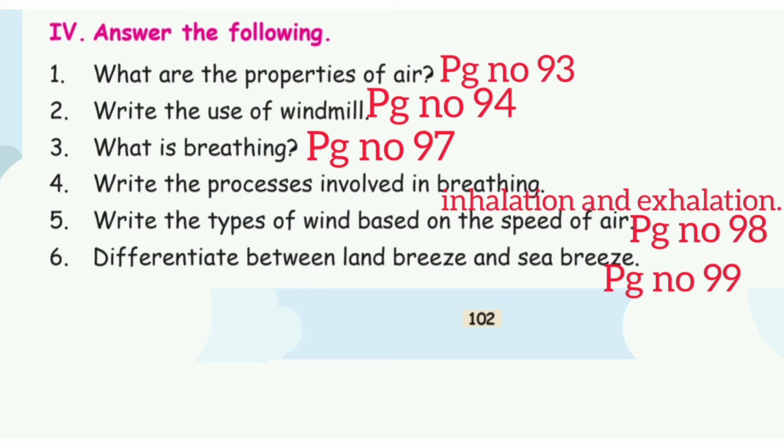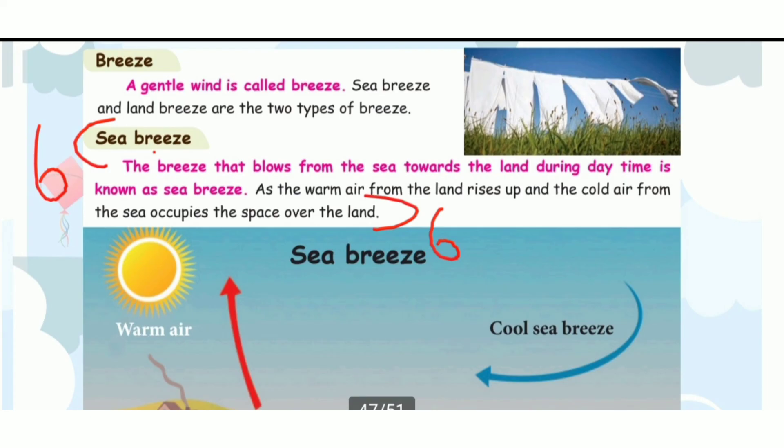Differentiate between land breeze and sea breeze. It is page number 99. First, sea breeze: The breeze that flows from the sea towards the land during daytime is known as sea breeze. As the warm air from the land rises up, cold air from the sea occupies the space over the land.